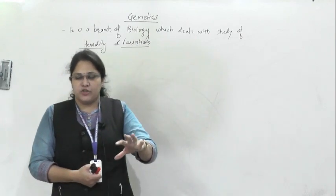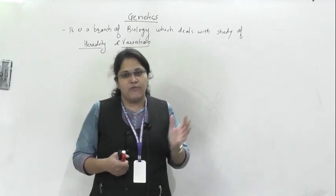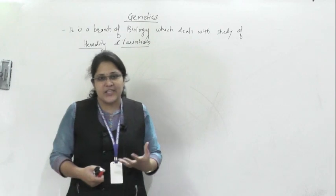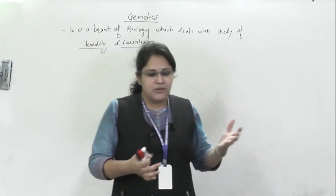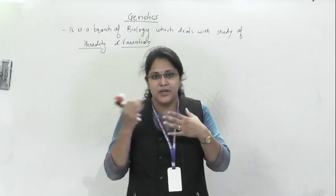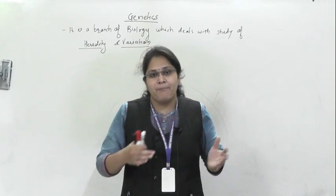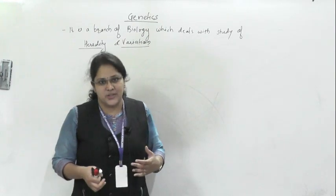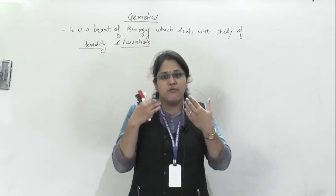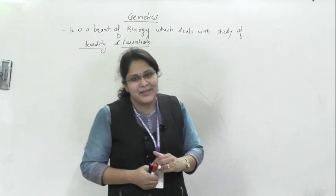We know that reproduction is the inherent capacity of every living cell. Rudolf Virchow's cell theory states that omni cellula e cellula — all new cells arise from pre-existing cells. Newly formed offspring receive characters from their parents. So, transmission of characters or features from parents to offspring, from one generation to the next, is known as heredity.